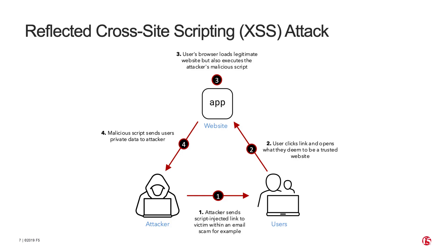Moving on to the third and final attack: a reflected cross-site scripting attack. This is a type of injection attack in which malicious scripts are injected into a link for a trusted website, and this link is then shared with legitimate users via scam emails or compromised social media accounts. Because the user thinks the link is legitimate, they click it and open the website in their browser. At the same time, the malicious script executes and begins capturing private user data like cookies, session tokens, or other sensitive data like usernames and passwords retained by the browser, and sends all of this information directly to the attacker.